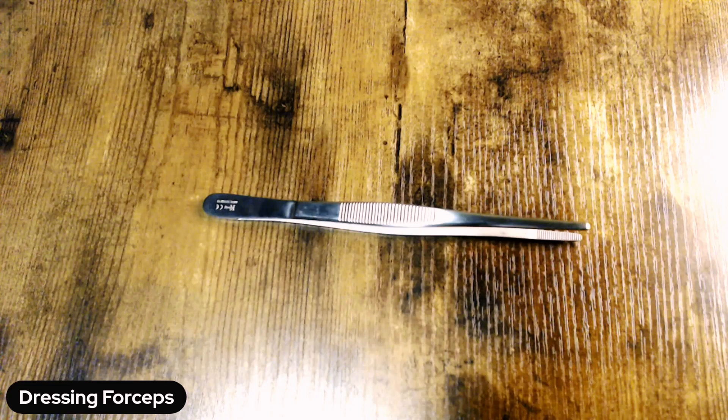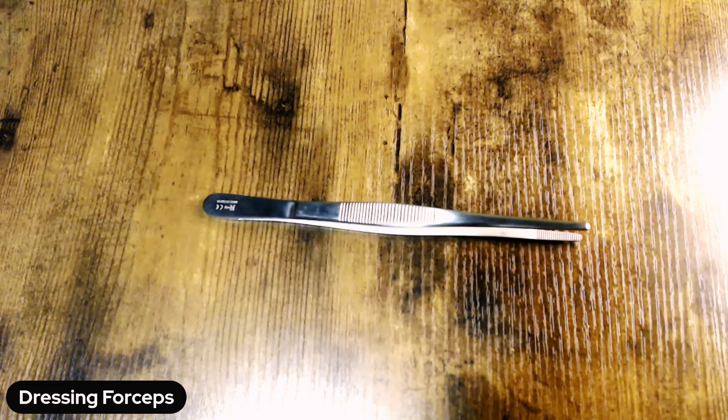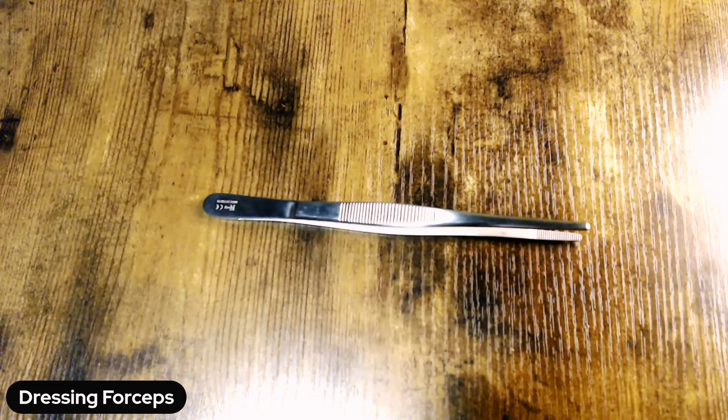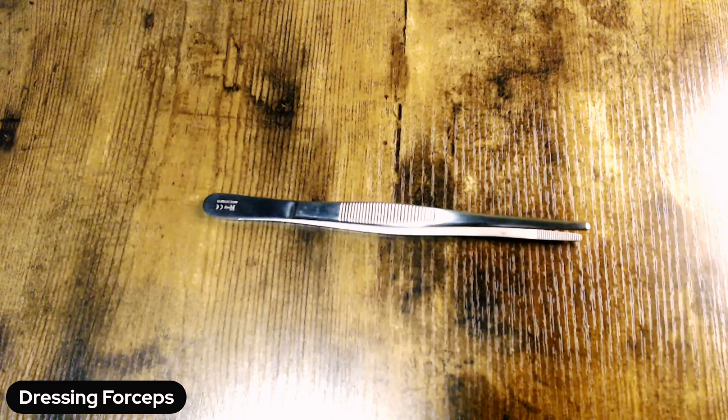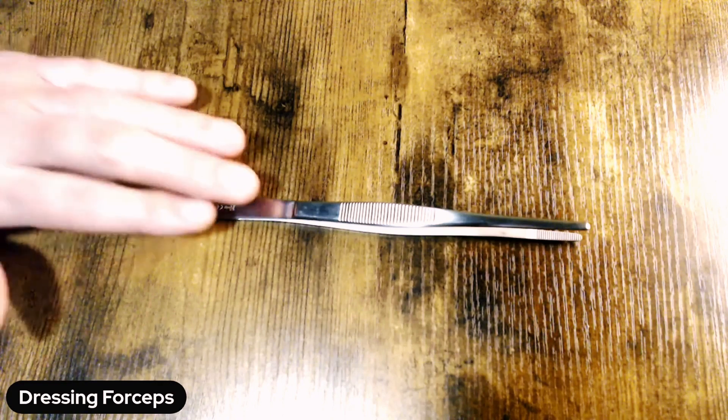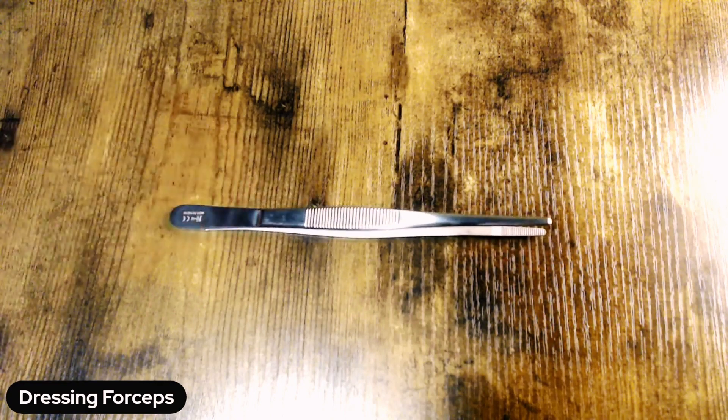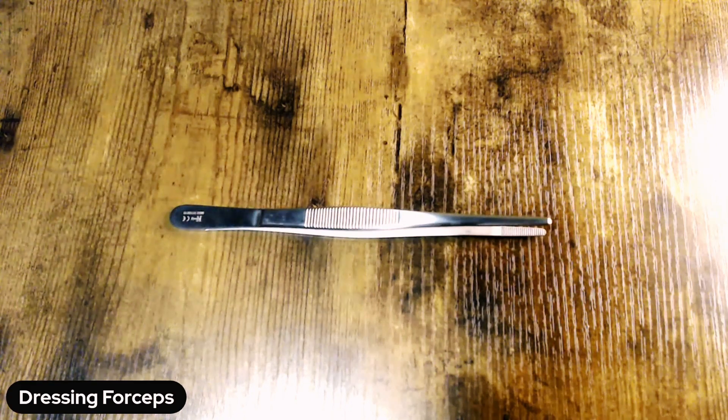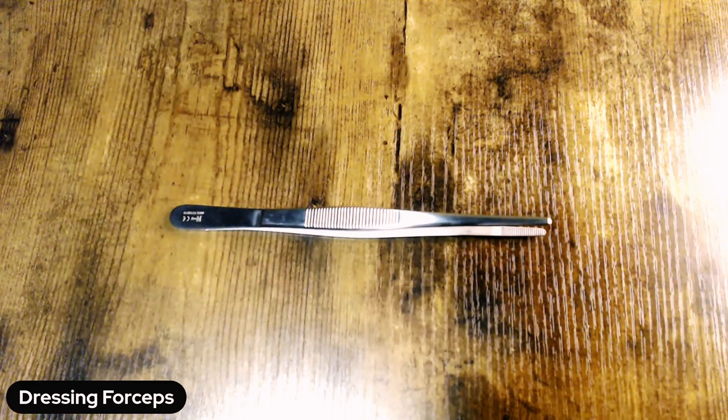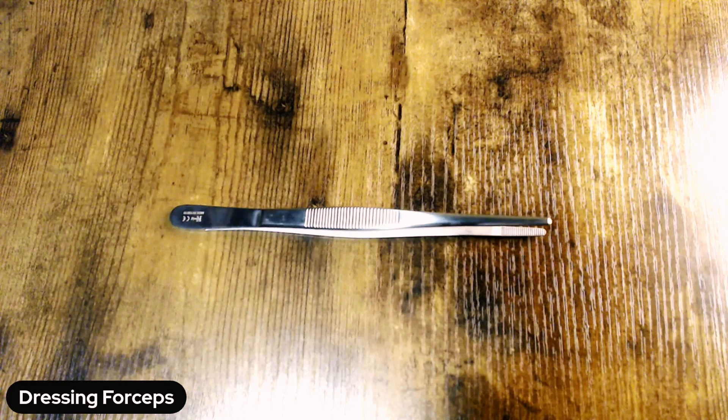All right, this is a pretty simple example of a forcep here, but it is important to know and be able to identify through those serrations on the distal tip. Thank you for watching a new episode of Hello, My Name Is. And until next time, keep fighting dirty!